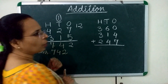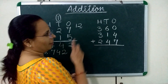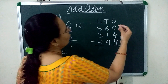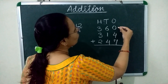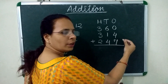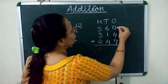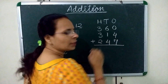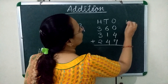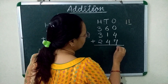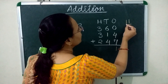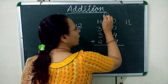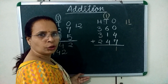Now one more example. We start from the 1's place. The 1's place numbers are 0, 4, and 7. 0 plus 4 is 4, and 4 plus 7 is 11. We will write 1 at the 1's place and carry 1 over to the 10's place.